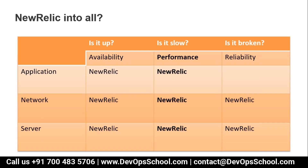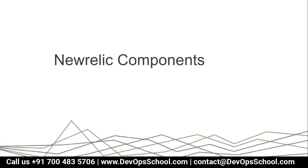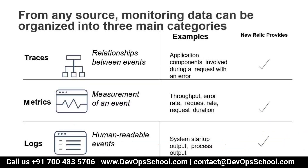This is a very important slide. Do you want to know if your application is up or not — that's availability — New Relic will help you. Network up or not — New Relic will help. Server up or not — New Relic will help. Do you want to know if your application is slow, network is slow, or server is slow — New Relic will help. New Relic is the leader in APM, Application Performance Management. Also, if your application, network, or server is broken — New Relic will help you everywhere. New Relic is the best component for observability setup.